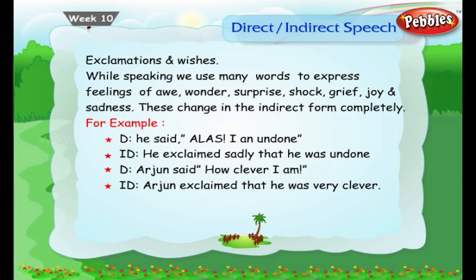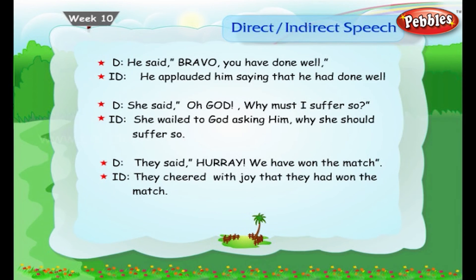Direct: Arjun said, 'How clever I am.' Indirect: Arjun exclaimed that he was very clever. Direct: He said, 'Bravo! You have done well.' Indirect: He applauded him, saying that he had done well.